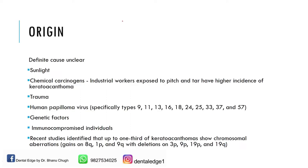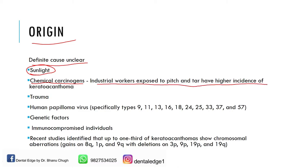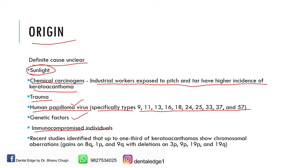Coming to the origin of keratoacanthoma — the definite cause is unclear. As it is commonly seen on the skin, one of the major causes is sunlight. It can also be caused due to chemical carcinogens; for example, industrial workers exposed to pitch and tar have a higher incidence. Trauma can also be one of the causes. HPV — human papillomavirus — specifically types 9, 11, 13, 16, 18, 24, 25, 33, 37, and 57 — is implicated, though you do not need to remember all types for exams. Genetic factors may also lead to formation of keratoacanthoma, and it is most commonly seen in immunocompromised individuals. Recent studies show that up to one third of keratoacanthomas show chromosomal aberrations.